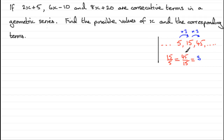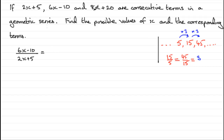And it's this idea that we use. So what we can say is that if these are our three consecutive terms, then 6x minus 10 divided by the previous term, which is 2x plus 5, would give us the common ratio. But that common ratio is also going to be 8x plus 20 divided by the previous term to that, which was 6x minus 10. So we've got an equation here that we should be able to solve for x.